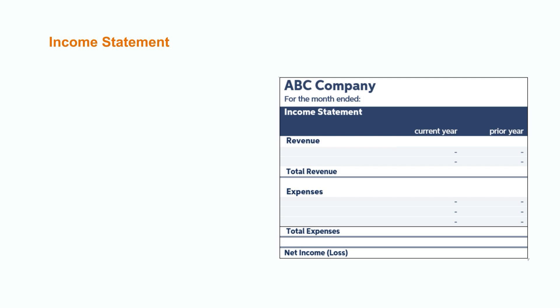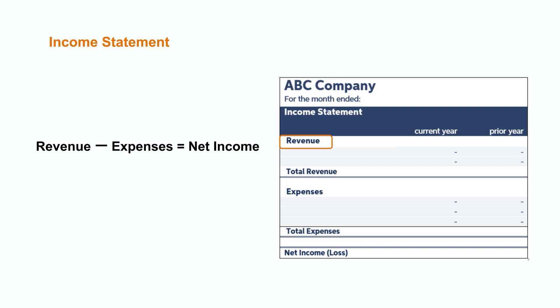The income statement can be broken down into three components and follows the formula: revenue minus expenses equals net income, which is otherwise known as profit. The first section of the income statement keeps track of all the company's revenue, which is the amount earned for selling goods or services. However, it's important to remember that revenue does not equal profit. In order to determine the profitability of a company, we need to take into account all of the operating expenses to keep the business running — things like rent, utilities, wages, and taxes. The final step is to take all the revenue earned for a period of time, less all the expenses, and hopefully we have something left over at the end of the day, which would be the net income.